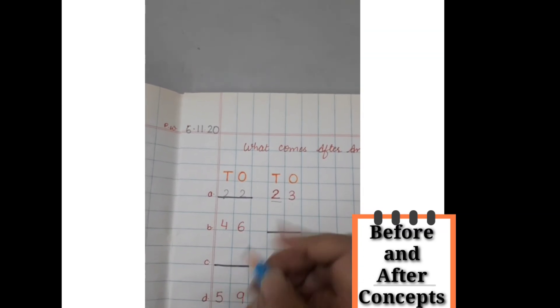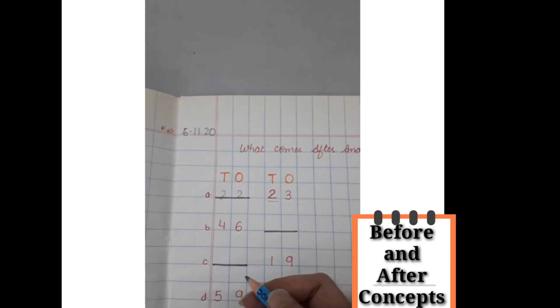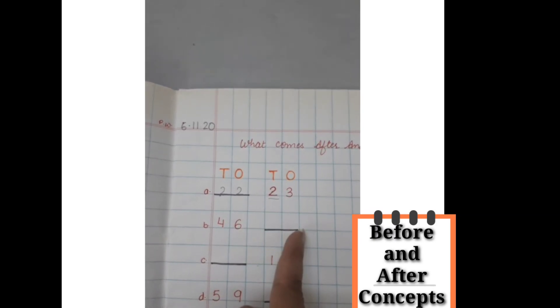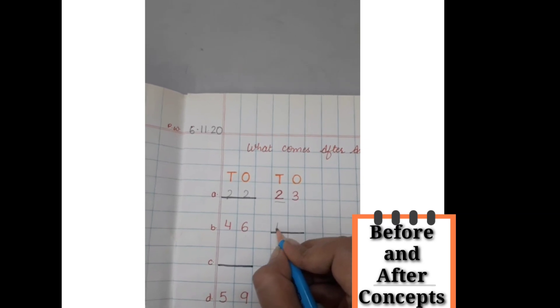Now 46. We have to go forward. That is, this is what comes after. So what comes after 46? 47.